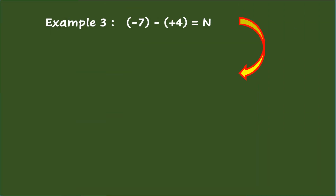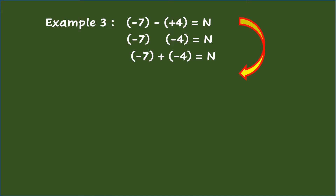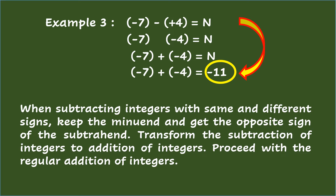Example 3: Negative 7 minus positive 4 equals n. Keep the minuend and get the opposite of the subtrahend. So we have negative 7 for the minuend and negative 4 for the subtrahend. Then transform subtraction to addition: negative 7 plus negative 4 equals n. Proceed with regular addition: negative 7 plus negative 4 equals negative 11. When subtracting integers, keep the minuend, get the opposite sign of the subtrahend, transform to addition, then proceed with regular addition of integers.